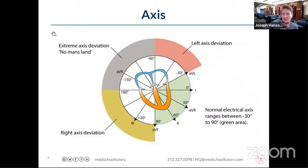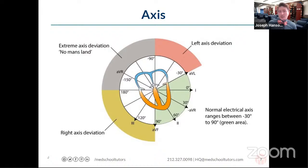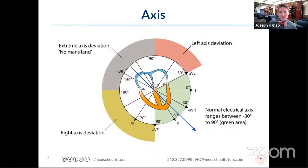Now I'll talk about axis. The thing we're trying to determine by looking at the heart's axis is the direction of electrical activity. Our main goal is to assess whether electrical activity is pointing where it should be. Typically, electrical activity points from the SA node down towards the apex of the heart — moving down towards the cardiac apex and into the patient's left. That's what we call a normal axis.